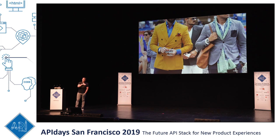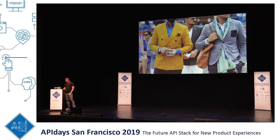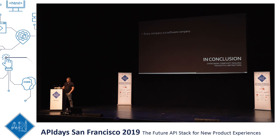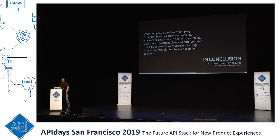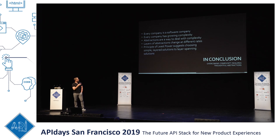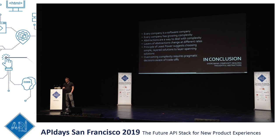As Fred Brooks said, the author of The Mythical Man Month, there are no silver bullets, and we need to approach our architectural decisions that same way. In conclusion: every company is a software company, every company is wrestling with growing complexity. One approach to dealing with complexity is to create abstractions, and the abstractions of different layers in any system evolve at different rates. Net APIs have evolved into different layers, and each layer means that if you apply the principle of least power, you will arrive at simpler abstractions that will help you deal with complexity. And overcoming complexity requires pragmatic decisions made while being aware of the trade-offs.